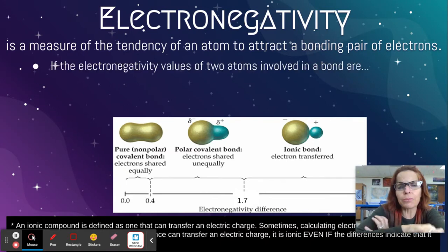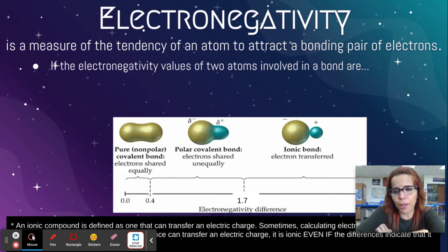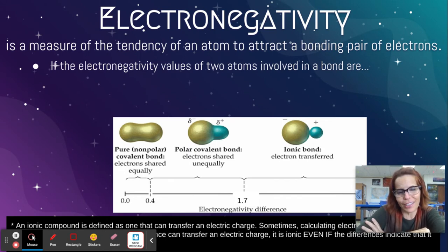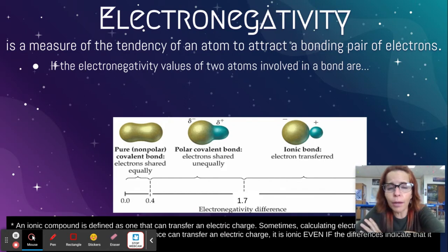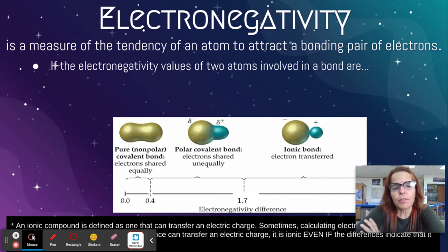We're going to do really simple math. We're going to do some subtraction in order to calculate whether bonds are polar covalent, nonpolar covalent, or ionic.